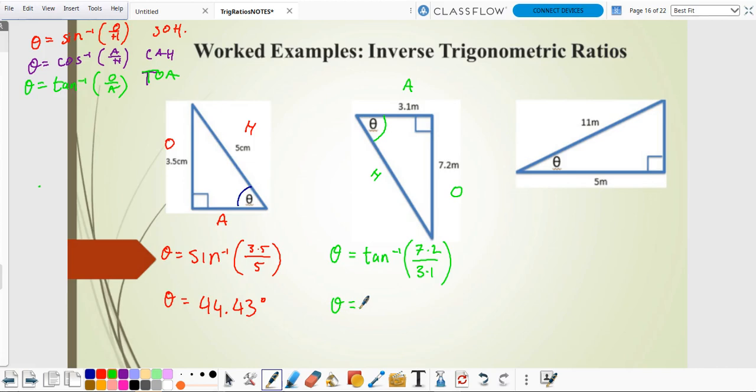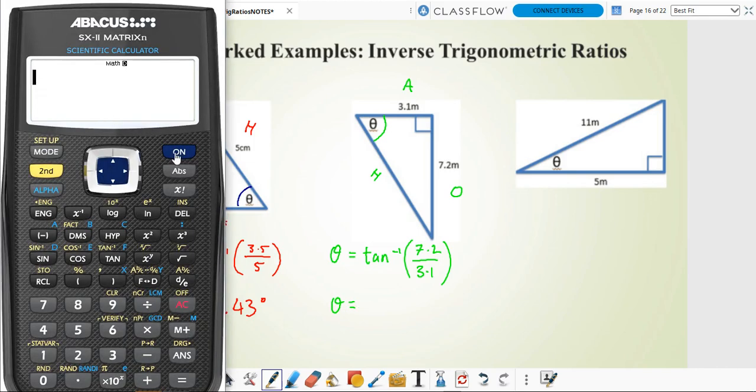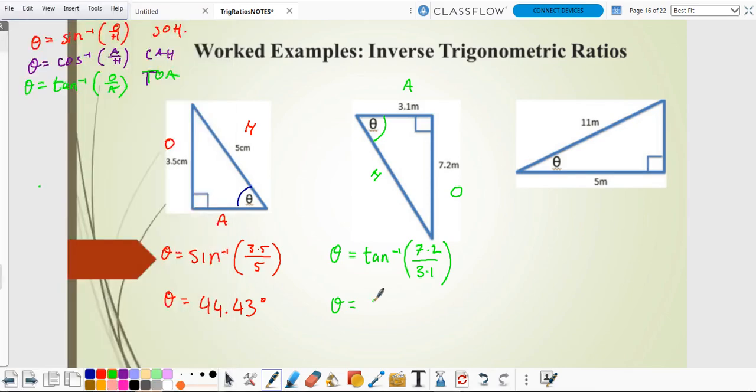So just put in your calc. Nice and easy. Just make sure you use inverse. 7.2 over 3.1. And then bracket. 66.71. Alright. And last one. Nice and easy. You can probably assume from the colors I'm using. This is going to use cos. But, let's make sure.